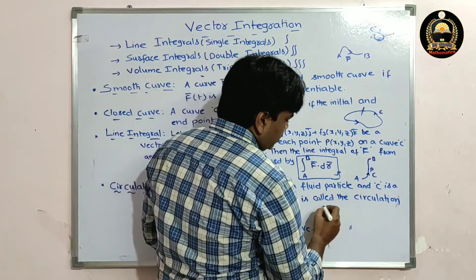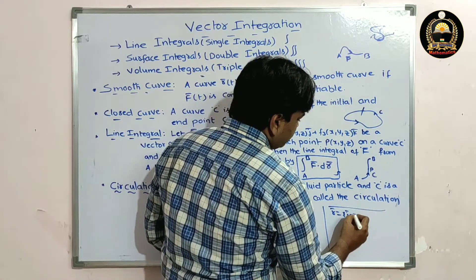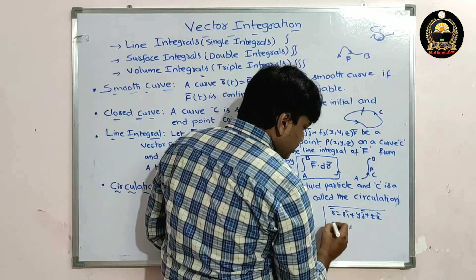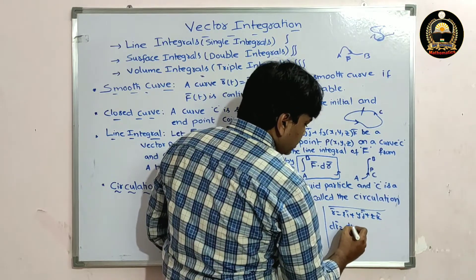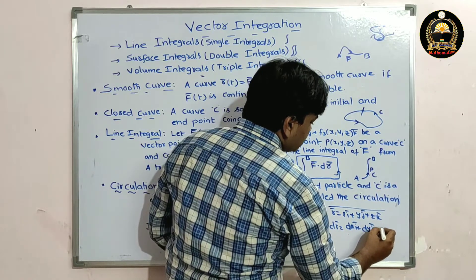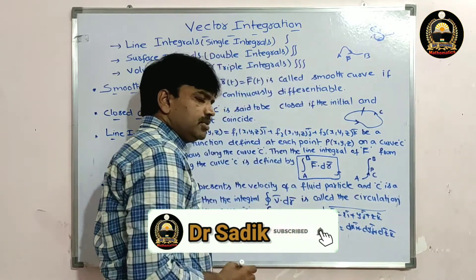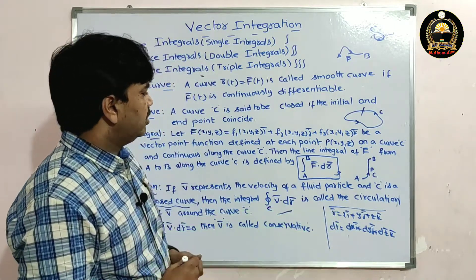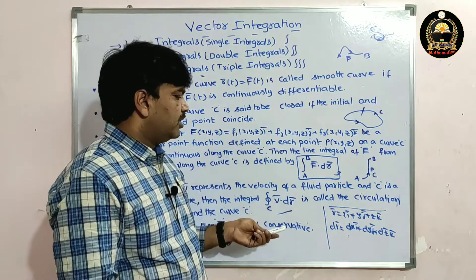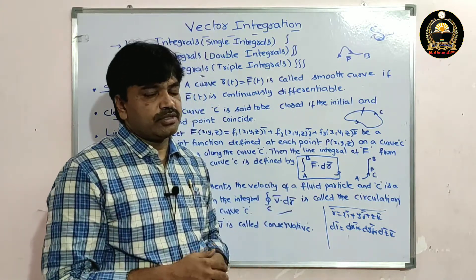We know r̄ = x·ī + y·j̄ + z·k̄. Therefore dr̄ = dx·ī + dy·j̄ + dz·k̄. Since it is a dot product, apply the dot product of f̄ with dr̄ and then evaluate the integration to get the required value.